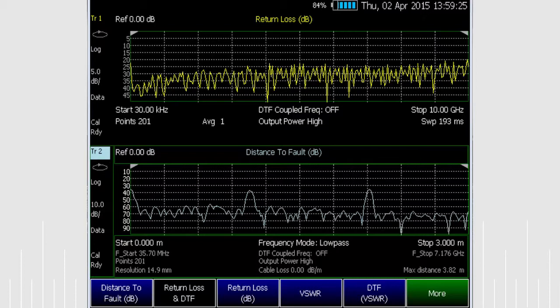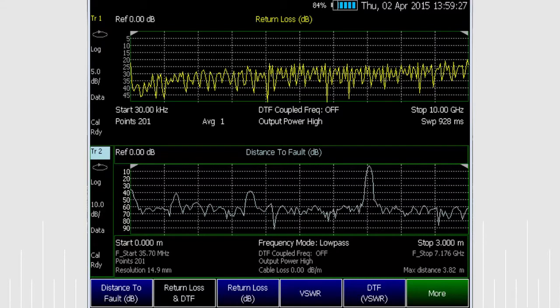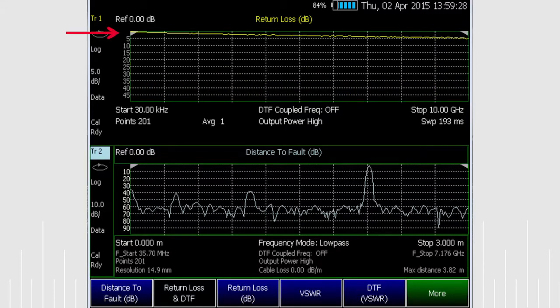Now I'll introduce a fault by loosening this adapter. You can see that we have almost all of the incident power reflected back in the return loss screen and that we have a large reflection down the line, but we don't know the nature of the fault. Let's tighten the adapters.